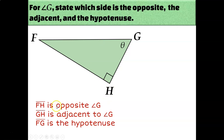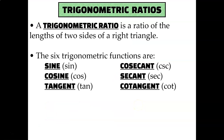So why do we care which sides are opposite, adjacent, and hypotenuse? Because it allows us to set up our trigonometric ratios. A trigonometric ratio is just a fraction — it compares two sides of a triangle. We give each possible combination of two sides a special name: sine, cosine, and tangent are the three primary trigonometric ratios, and there's also cosecant, secant, and cotangent. In geometry, we'll explore what they are and how to write the ratio.